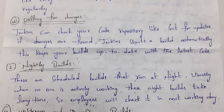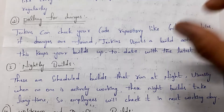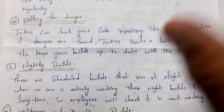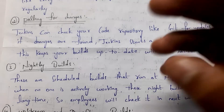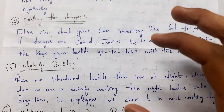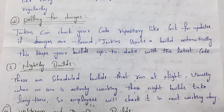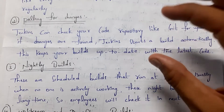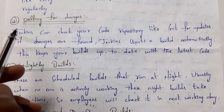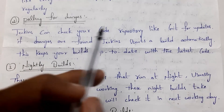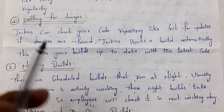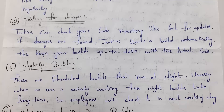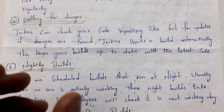Next one is polling for changes. Whenever any developer writes code, at first he will place that code in Git software, and from Git he will place that code in GitHub. So whenever a developer places code in GitHub, automatically the Jenkins server will start the build process. If another developer modifies code in GitHub, Jenkins server will also start the build process automatically. So Jenkins can check your code repository like Git for updates — if changes are found, Jenkins will start the build process automatically, so only the latest code will be on the server.